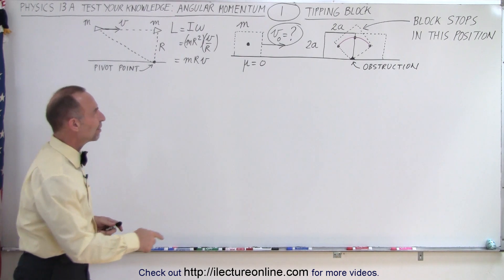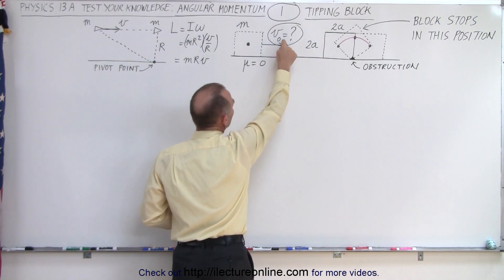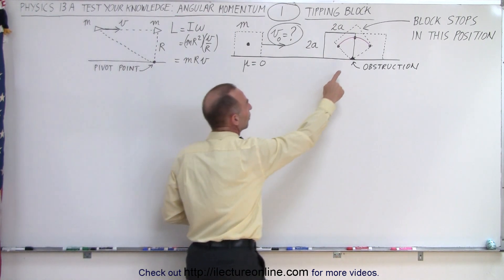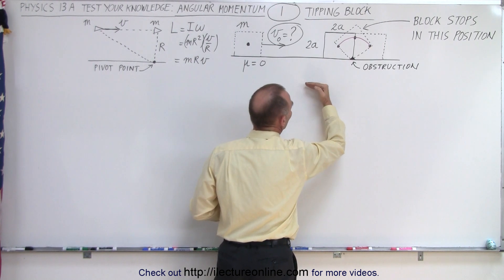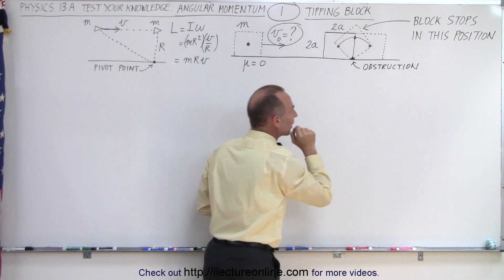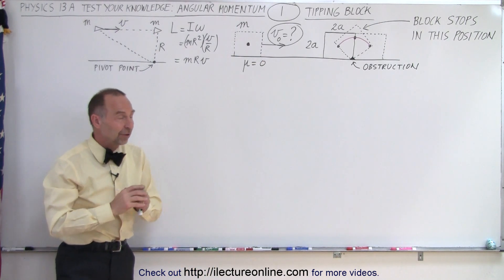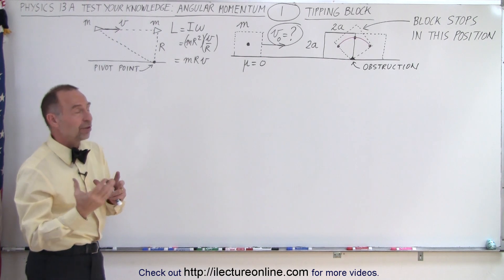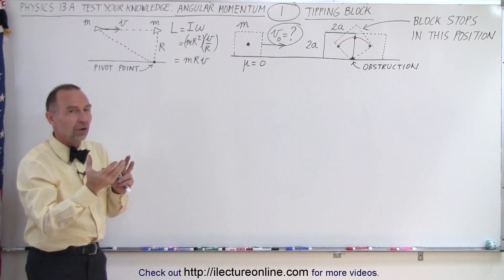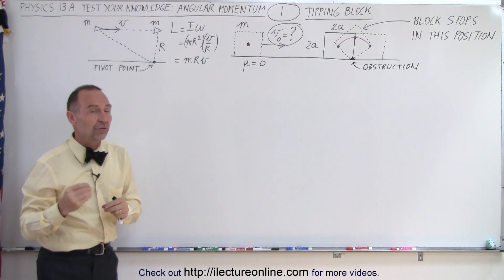We have a block of mass m with dimensions 2a by 2a that's sliding with some initial velocity across a horizontal frictionless surface. It continues until it hits an obstruction, then it tips over and gets to its final position where it's standing straight up and the velocity stops. Based on that we should be able to determine what the initial velocity of the block was. We have a collision, so we use conservation of momentum, then motion after where we go from kinetic energy to potential energy — a two-part problem.